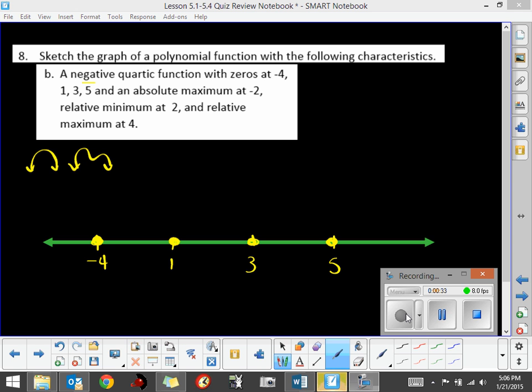The other clue is that it has to have an absolute maximum at negative 2. So negative 2 is somewhere in here. It has a maximum point. That maximum point can be anywhere on our graph, but this has to be the absolute max, which means no point can be higher than that one on our graph.